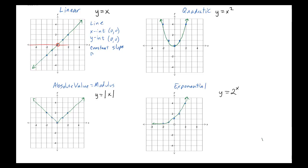The last two things we want to talk about are domain and range. Domain is the x-values that exist for this function — essentially, what can I put in for x and still get an answer for y? You can put anything in for x. The graph keeps going to the right and to the left forever, so the domain goes up to positive infinity and down to negative infinity. We don't use 'equal to' with infinity because infinity is not really a number — it's more of an idea.